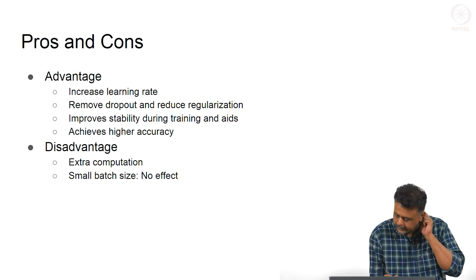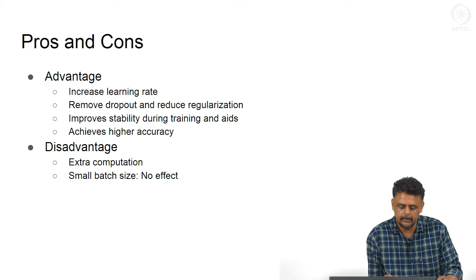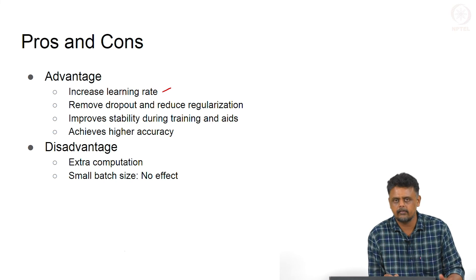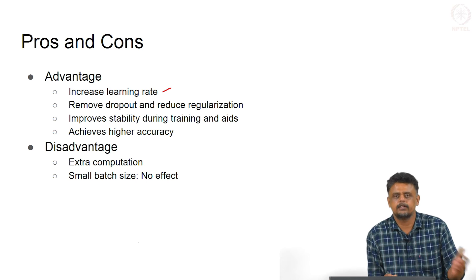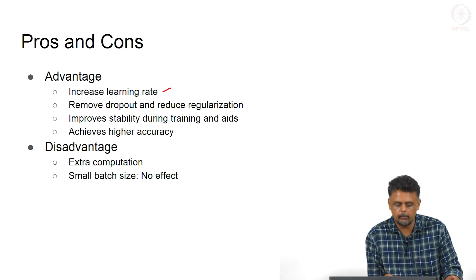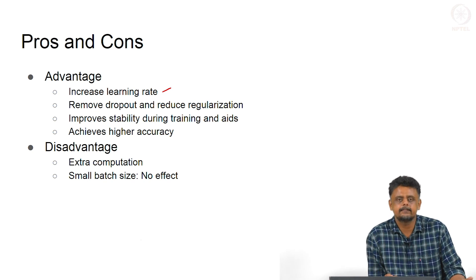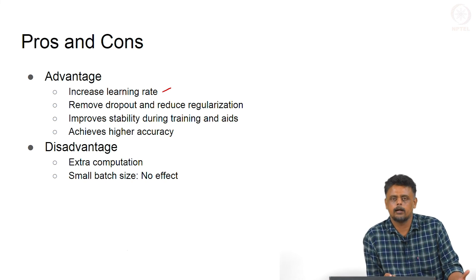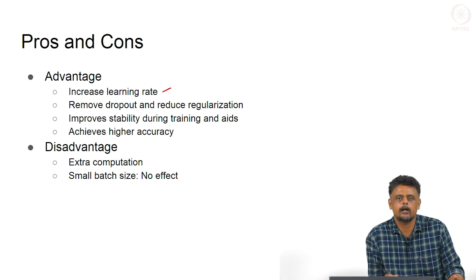The advantages: the authors comment that it increases the learning rate, so you can train with a high learning rate leading to faster convergence. With high learning rates and large updates you might get saturation, but that will not happen here because you are constraining your activation values to lie within a range. It can also help you remove dropout, since the regularization effects of dropout are apparently carried over by batch normalization. It also improves stability during training, because large activations or large weights leading to poor training can be taken care of by batch normalization.